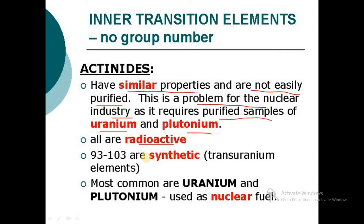All are radioactive. Elements with atomic number 93 to 103 are synthetic. These are called transuranium elements. The most common are uranium and plutonium, used as nuclear fuels. We have already studied this in the previous unit on nuclear chemistry.